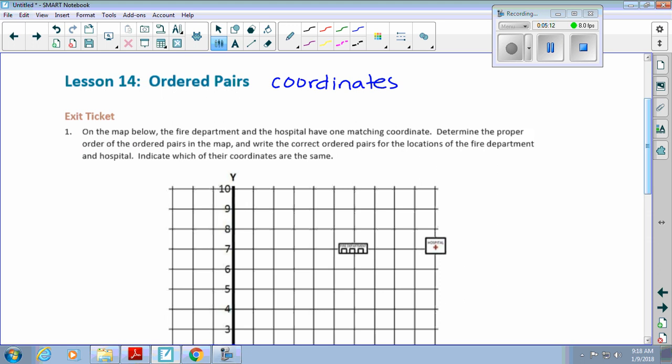In parentheses, we're going to write X, Y. Our X coordinate always comes first. A little bit more review. What do we call these lines? It begins with an A. Axes. This is the X axis. And this is the Y axis. So they are the X and Y axes.